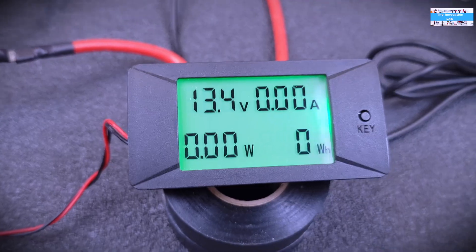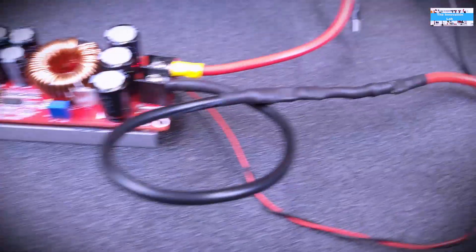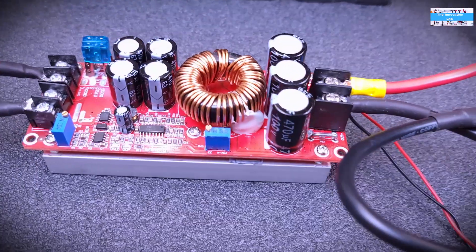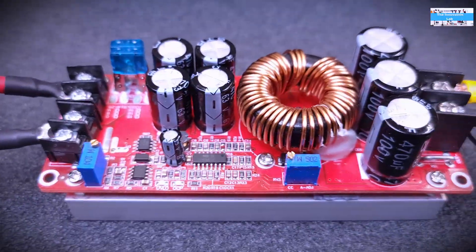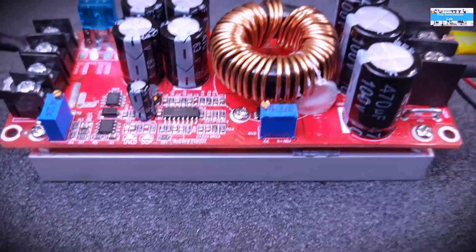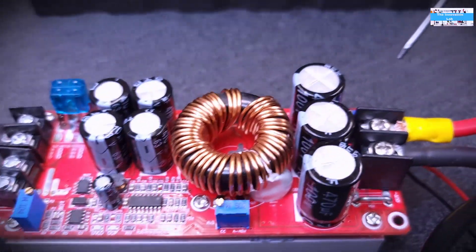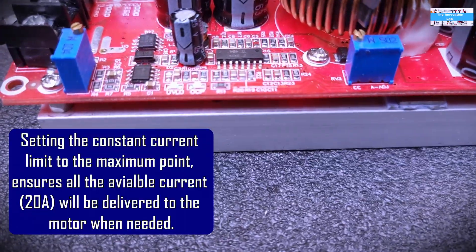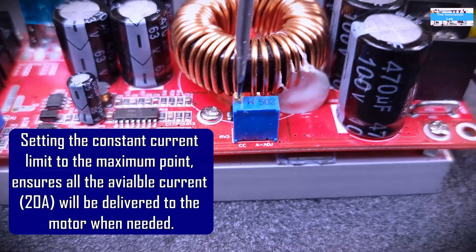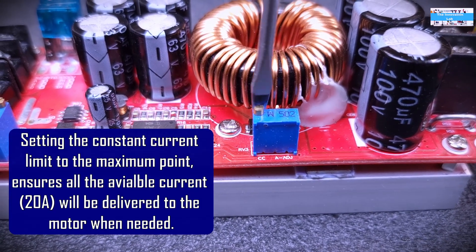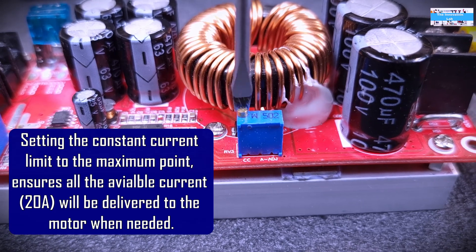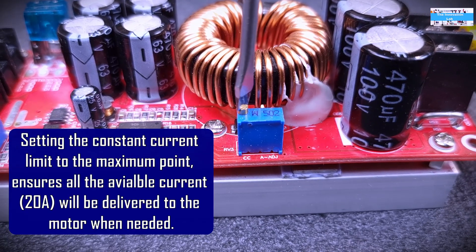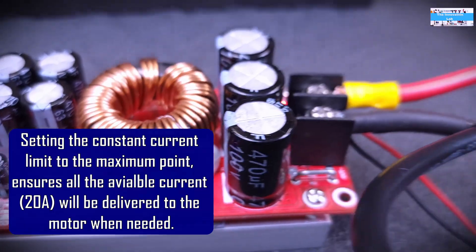As you can see it's still set to 13.4 volts which is not enough, so the first thing we're going to do is adjust the settings - the output current and voltage setting of this DC to DC boost converter. First of all we want to make sure that we increase the output current all the way to the maximum point so that we don't limit the performance of the DC motor.